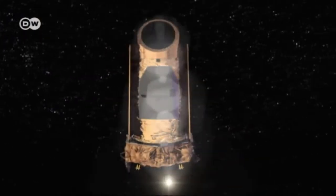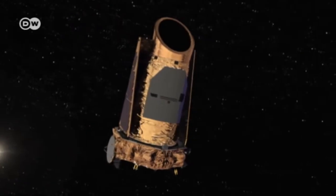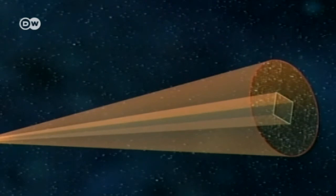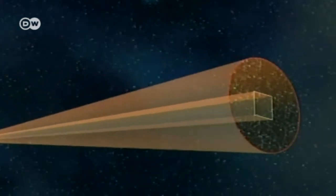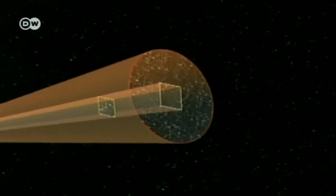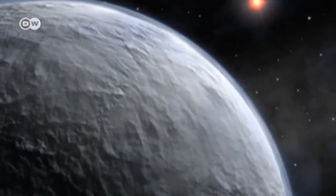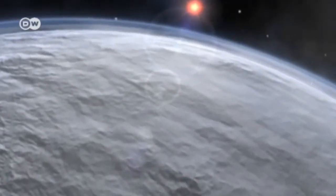But Kepler won't be finding a second planet Earth. Its mission was aborted in August. Two of the probe's reaction wheels are defective. Without these, it can no longer align itself with sufficient accuracy. The mission was going to be extended because it was so successful.